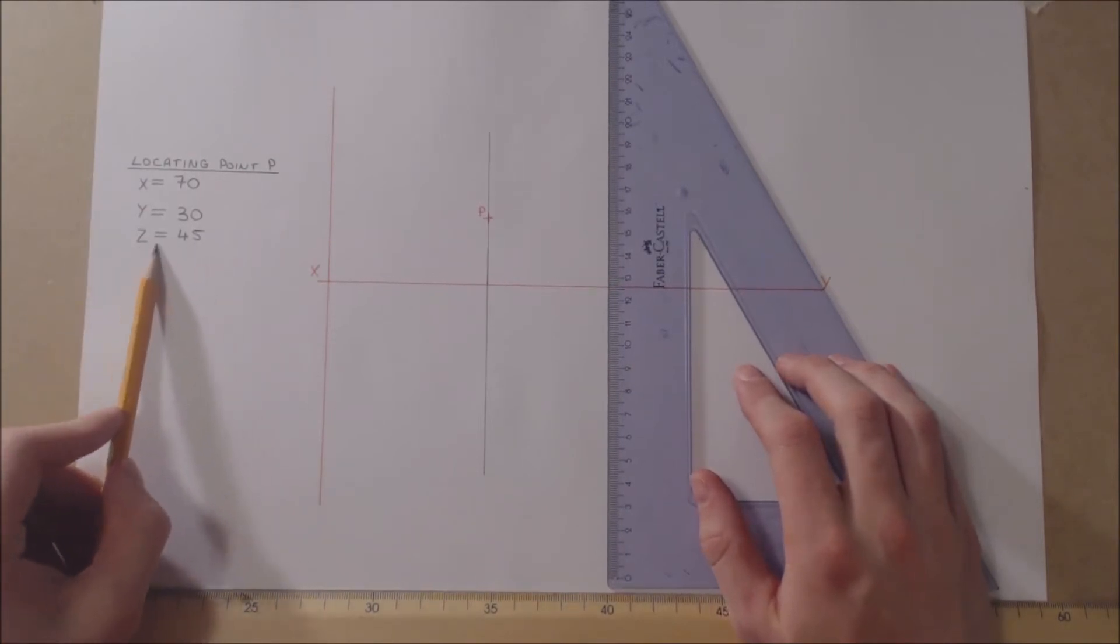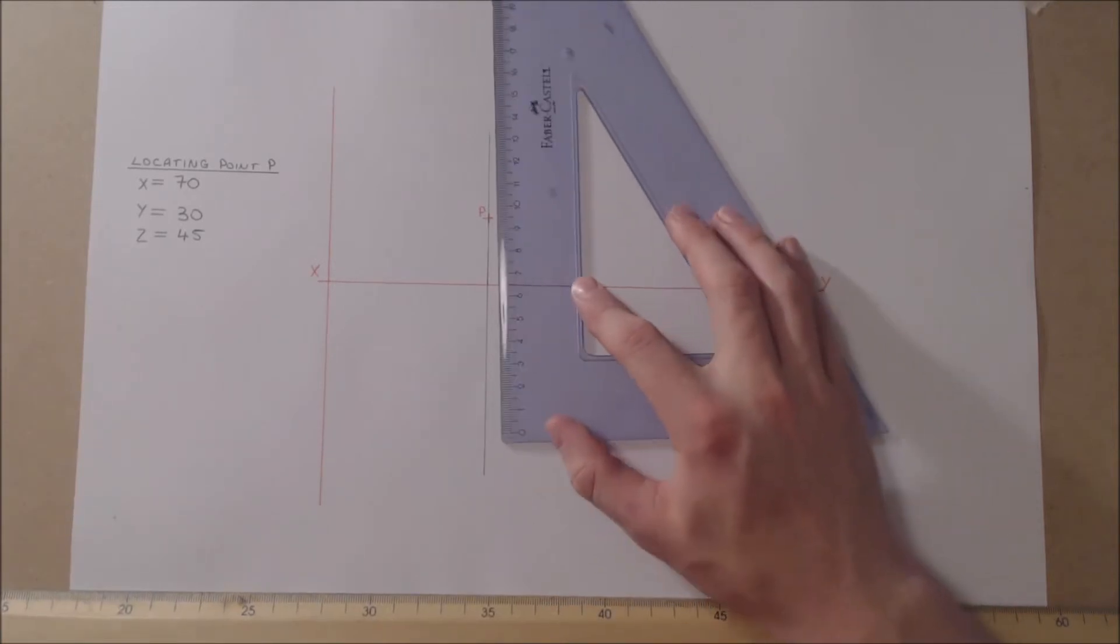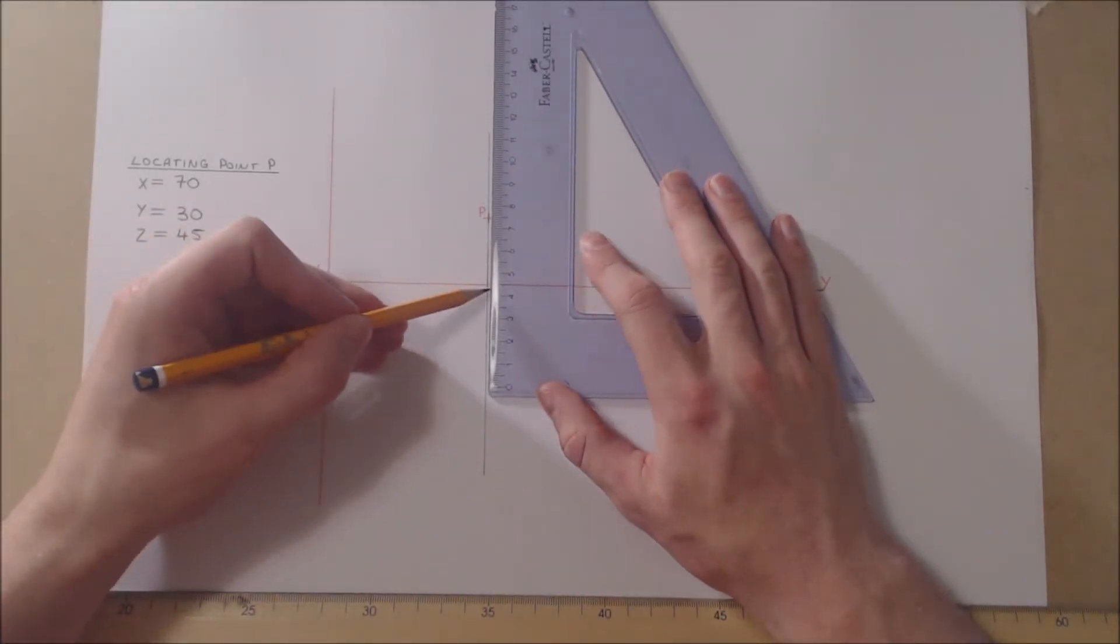Z equals 45 mil, so we measure 45 mil from the vertical plane, i.e., the X, Y line in plan.